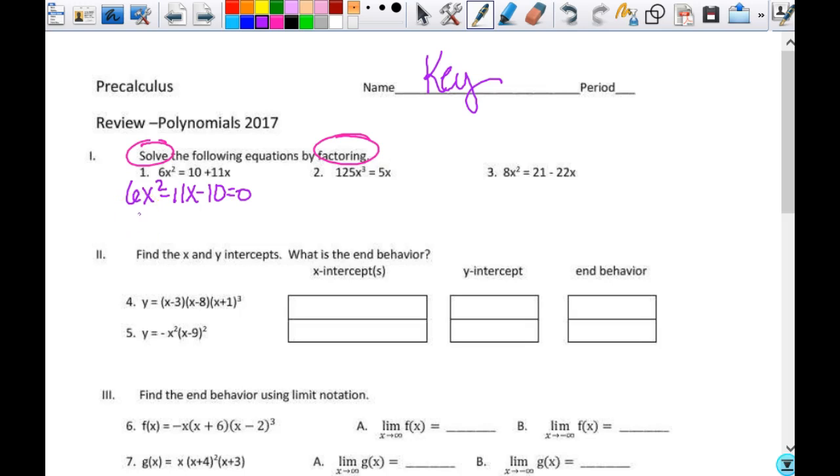So I'm going to choose to do by grouping. I always look for the GCF first. There isn't one. So do 6x squared. I know 15 times 4 is 60. And if I have a negative 15x and a positive 4x minus that 10 equals zero, then I will be good there.